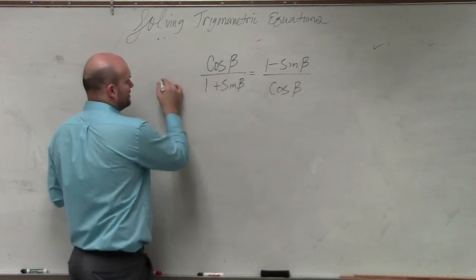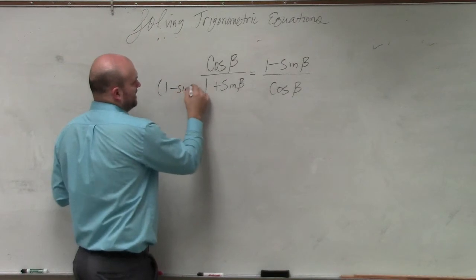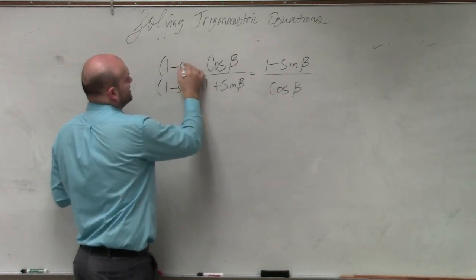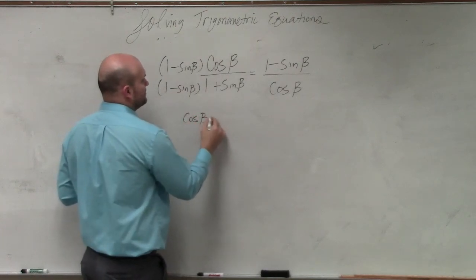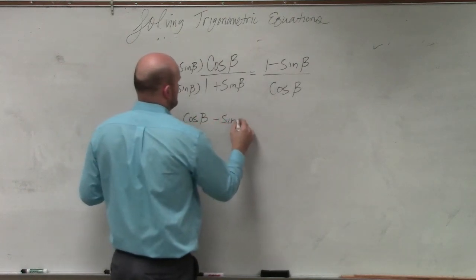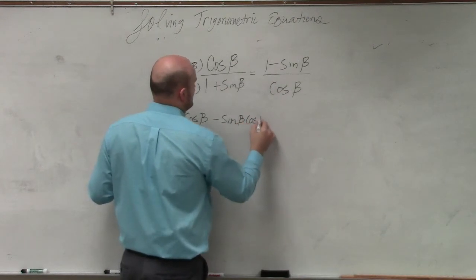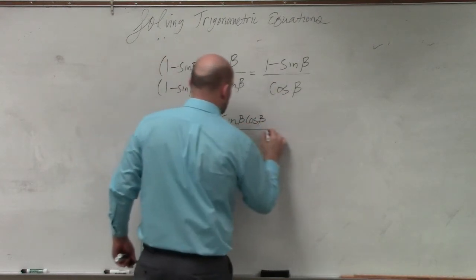So if I multiply by the conjugate, I'm going to get 1 minus sine of beta, 1 minus sine of beta. When doing that, I get cosine of beta minus sine of beta, cosine of beta all over...